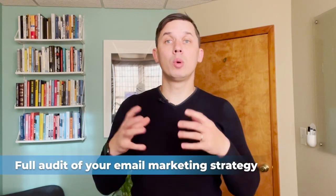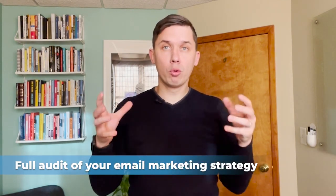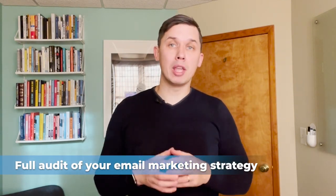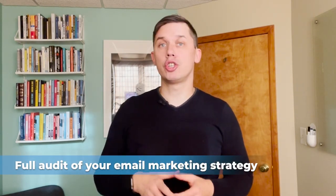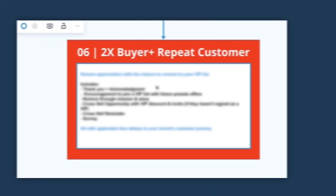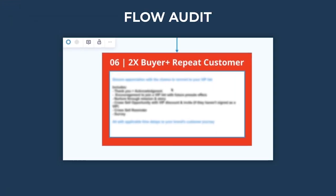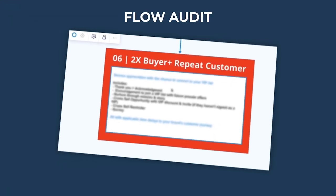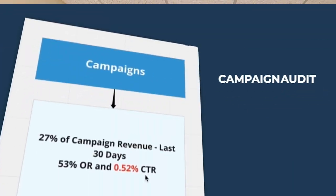The second part is we will do a full audit of your email marketing strategy — specifically the automated part: flows or automations. We will review what automations you have, what you don't have, and for those you do have, how you can improve them, optimize them, and bring them to the next level.